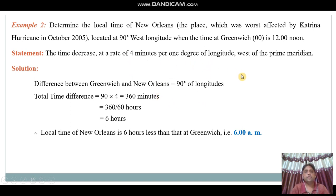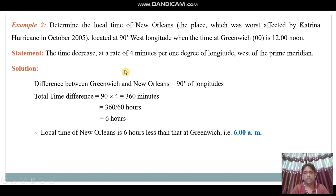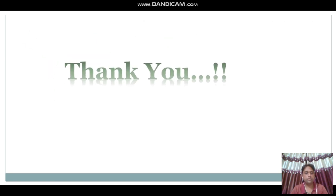To summarize: if the desired location is on the west side of the prime meridian, the time will decrease. If the desired location is on the east side of the prime meridian, the time will increase. Hope you understood this — please practice these examples at home. Thank you very much.